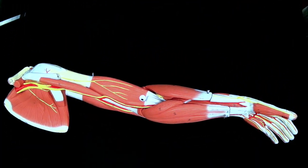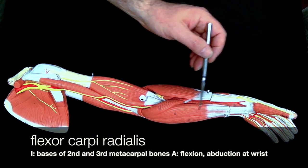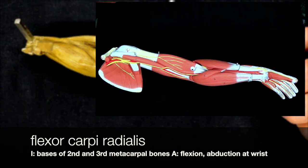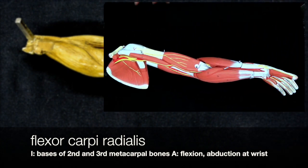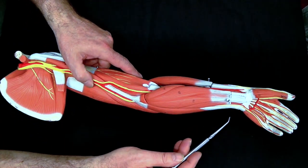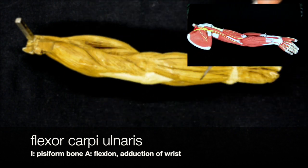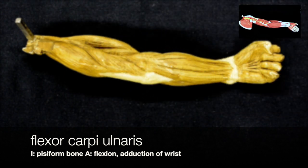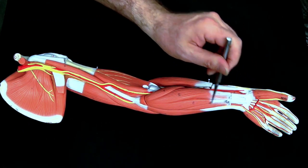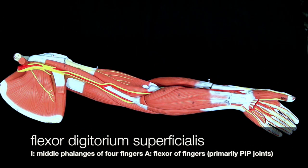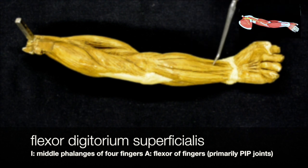To the thumb side of the palmaris longus we have the flexor carpi radialis, which can be seen on our smaller model. On the little finger side we have the flexor carpi ulnaris, also seen on this model. Beneath the palmaris longus we have the flexor digitorum superficialis, and on our smaller model this is the muscle that is under the palmaris longus.